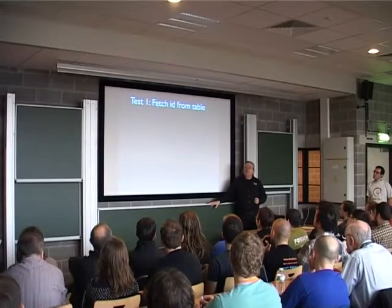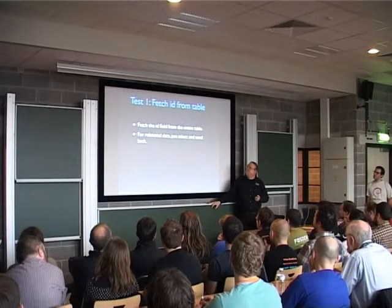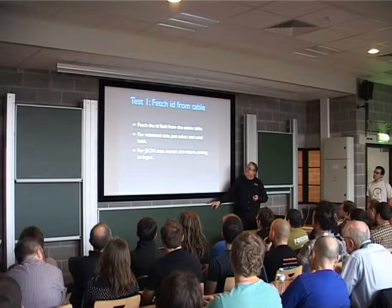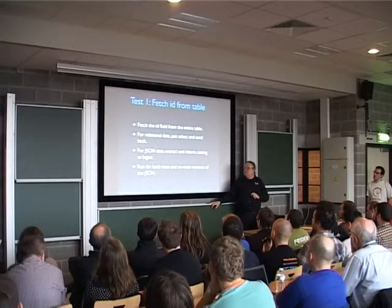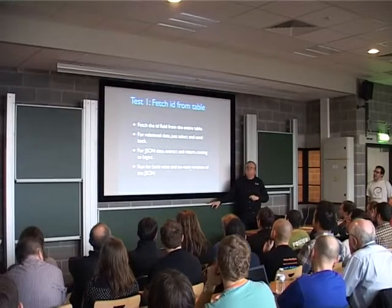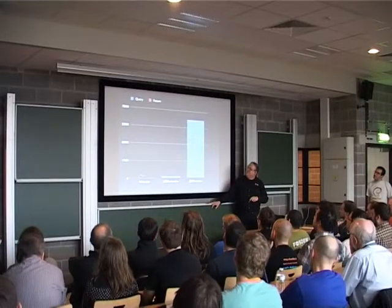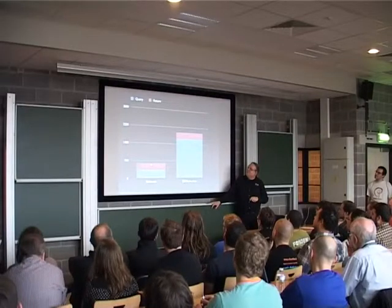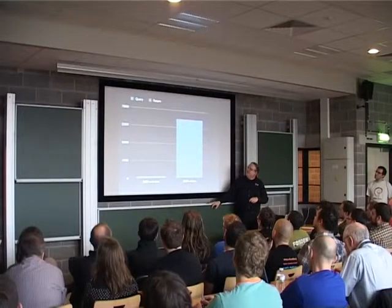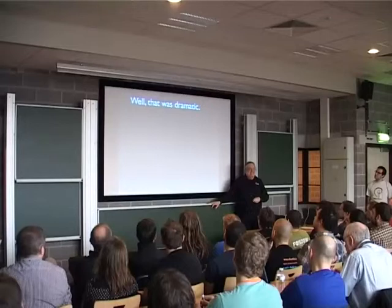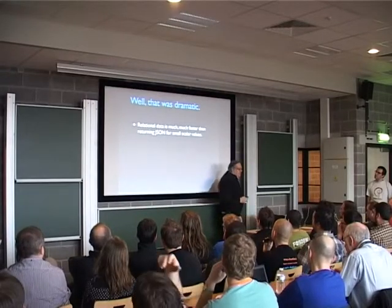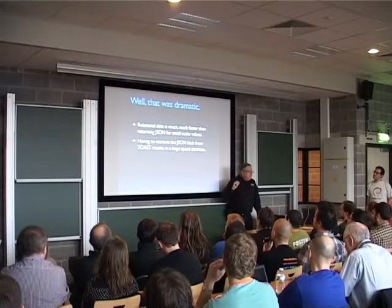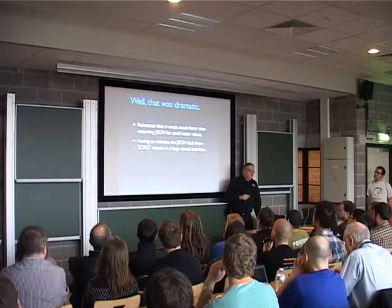Test results. First test: just fetch the ID column, which is a big int from the table. For relational data, it's just SELECT id. For JSON data, it's SELECT JSON blob arrow id, casting it to big int. I ran it for both the note and no-note versions of JSON. In the case of the no-note one, there's no toast table. The results are dramatic: relational is fast, JSON without the note field is somewhat slower, and JSON with the note field grinds to a near stop. Getting the JSON blob out of toast results in a huge speed decrease.